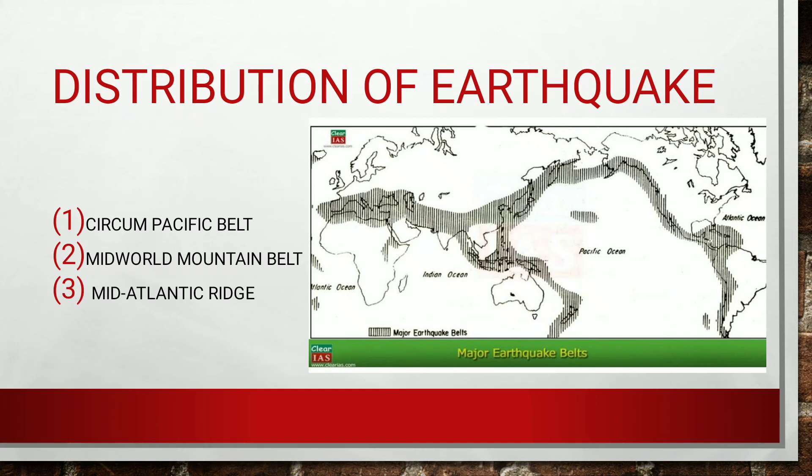The second belt is the Mid-World Mountain Belt, which stretches from Eastern Europe covering the Alpine-Himalayan ranges in Europe and Asia, accounting for about 20% of all earthquakes. The third is the Mid-Atlantic Ridge, comprising areas along the mid-oceanic ridges where 10% of earthquakes occur. In this ridge, two tectonic plates move in opposite directions.